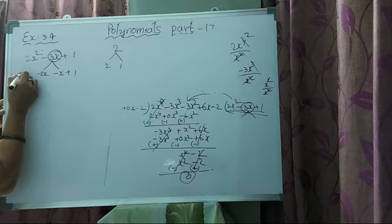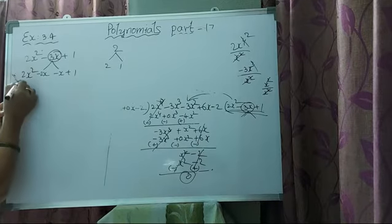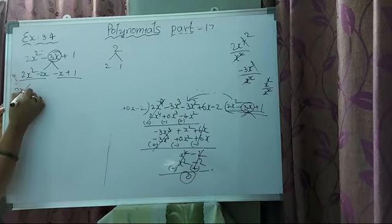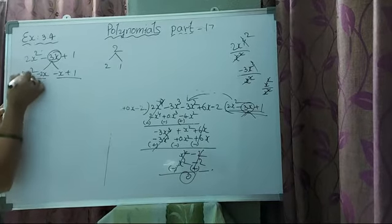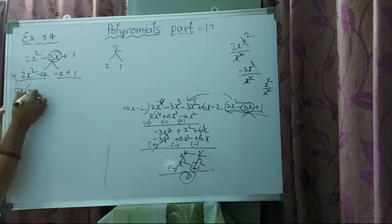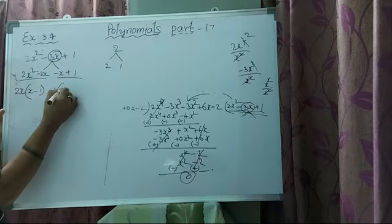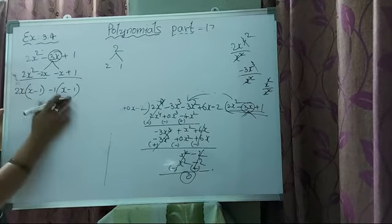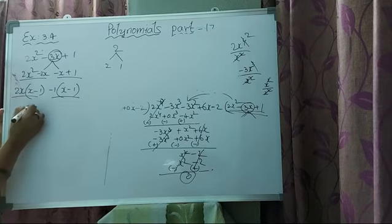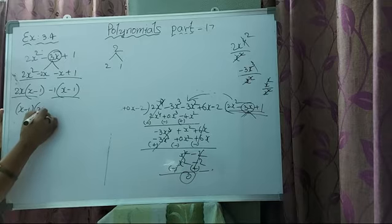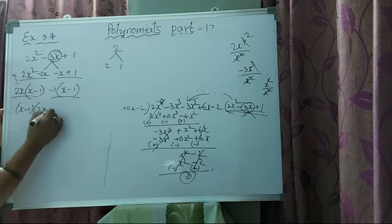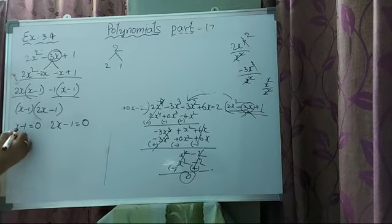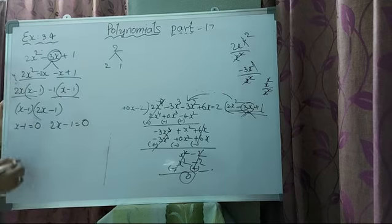From the first two terms, 2x is common: 2x times x minus 1. From the last two terms, minus 1 is common: minus 1 times x minus 1. So x minus 1 is common in both cases. Take x minus 1 out. What remains is 2x minus 1. So the factors are x minus 1 equals 0 and 2x minus 1 equals 0. These two are the factors of that particular polynomial.